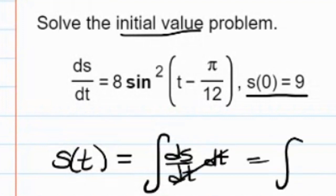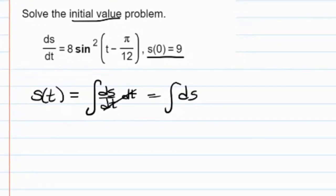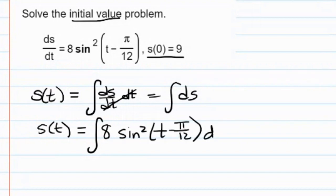In other words, the integral of the derivative of s is the function s. So we're going to find s of t equals the integral 8 sine squared t minus pi over 12 dt.